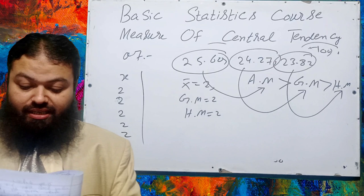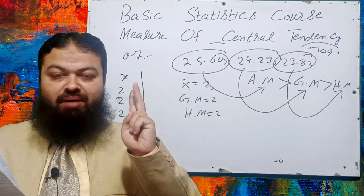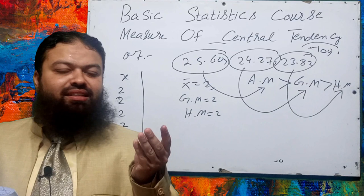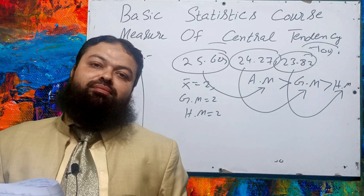Question number 8: which is also called average of position? (a) median, (b) quartiles, (c) deciles and percentiles, (d) all of the above. Please keep in mind: median, quartiles, deciles, and percentiles are all called averages of position. The answer is (d) all of the above.